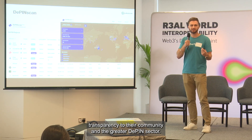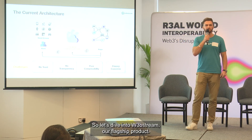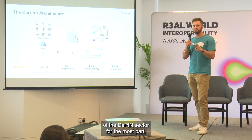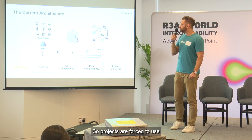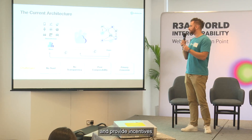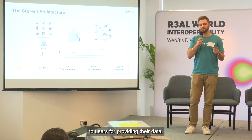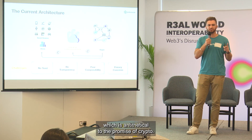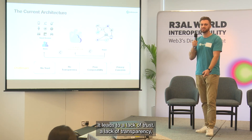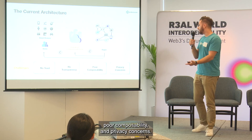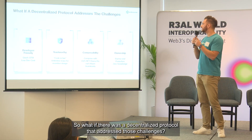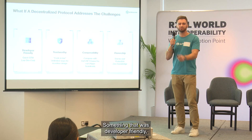Let's dive into Web Stream, our flagship product. Here's a look at the current architecture of the DePIN sector: for the most part, projects are forced to use centralized cloud to run computation and provide incentives to users for their data. This is a problem because it leads to centralization — which is antithetical to the promise of crypto. It leads to a lack of trust, lack of transparency, poor composability, and privacy concerns.